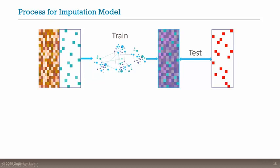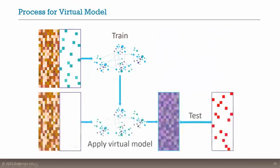We built two different types of model to answer each of the three questions. The first is what we call an imputation model: we take the sparse data matrix of compound–assay pairs, supplement it with chemical descriptors, train a model, and then use that model to fill in the gaps in the matrix — imputing those missing values — which we then test against held-back blind data.